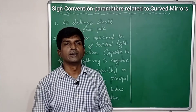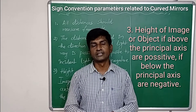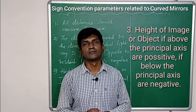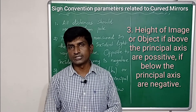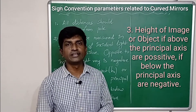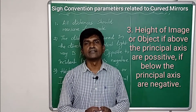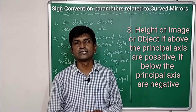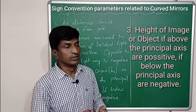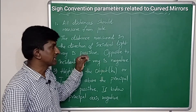The third sign convention concerns the heights of objects and images. If these heights are above the principal axis — whether image or object — that height is taken as positive. If below the principal axis, then that height is taken as negative. Now we will learn about these sign conventions with examples.